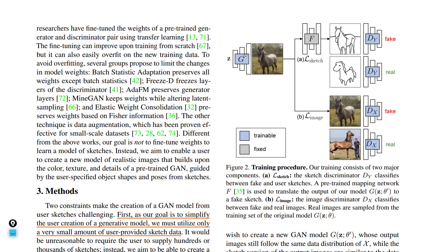Once an image is generated, it is passed to a discriminator that classifies whether the input images are fake or real. Based on this feedback, the generator is updated. So now we are not only updating the generator's parameters to output images that look like the sketches, but also updating those parameters to maintain a certain image quality and diversity.